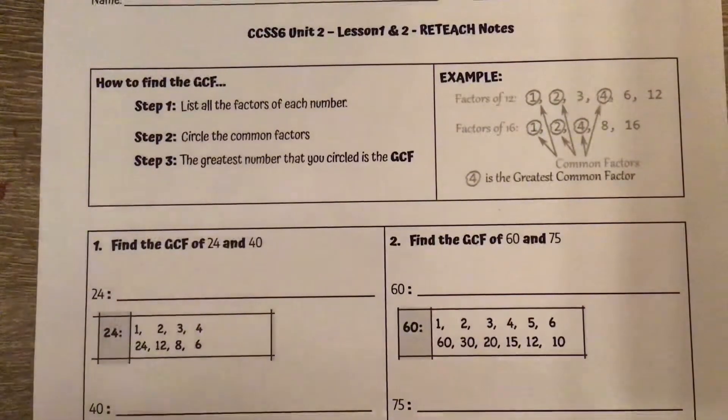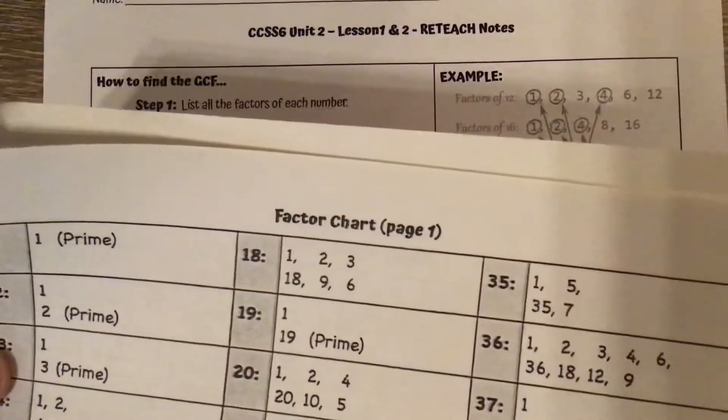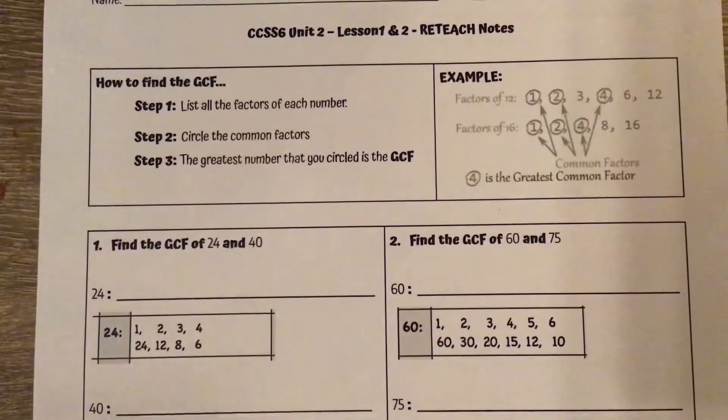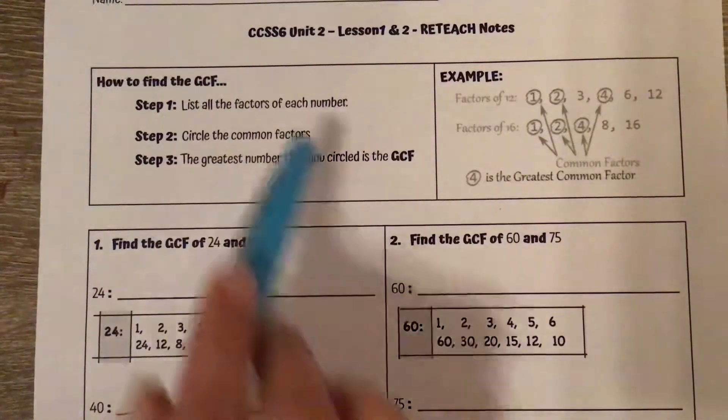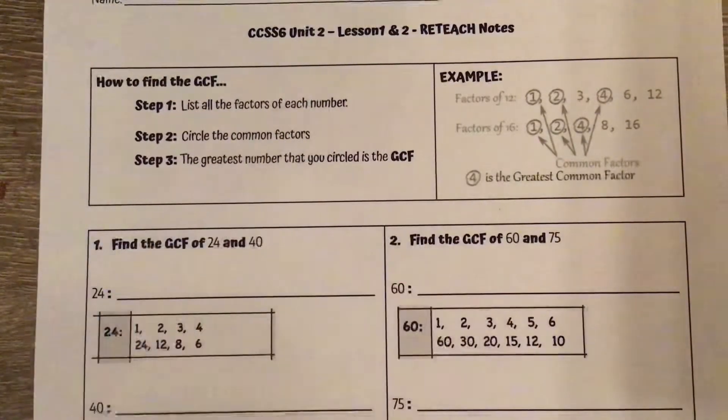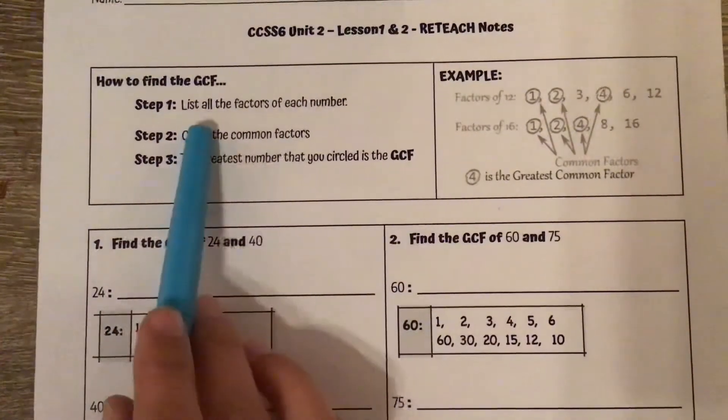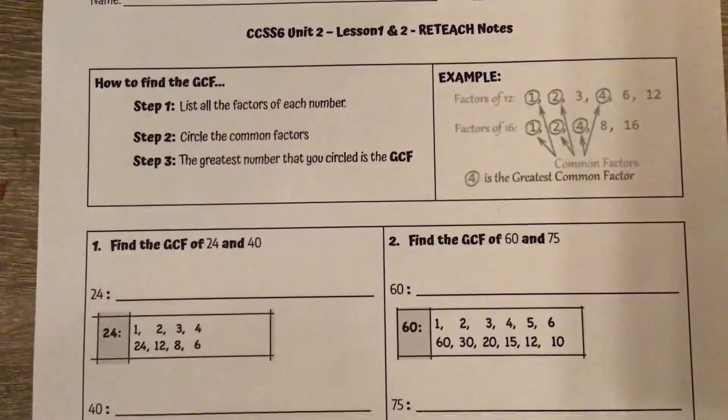So let's take a look at lesson one and two again, looking at GCF and simplifying fractions. You will want to have your resource packet out with your factor chart. For some of the problems we included that already for you. So reminders up here of how to find the GCF. We're going to list out all the factors, circle the common factors, and the greatest one is the GCF.